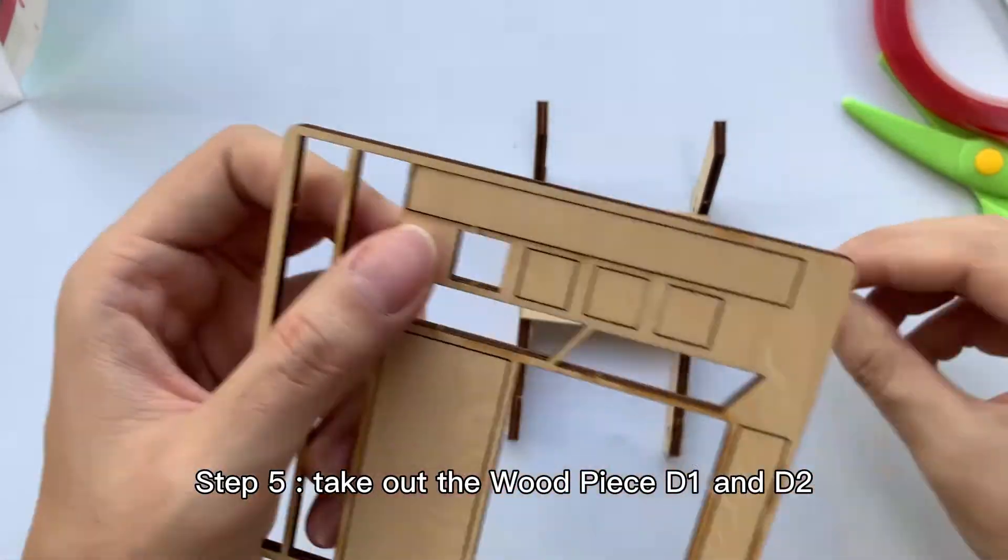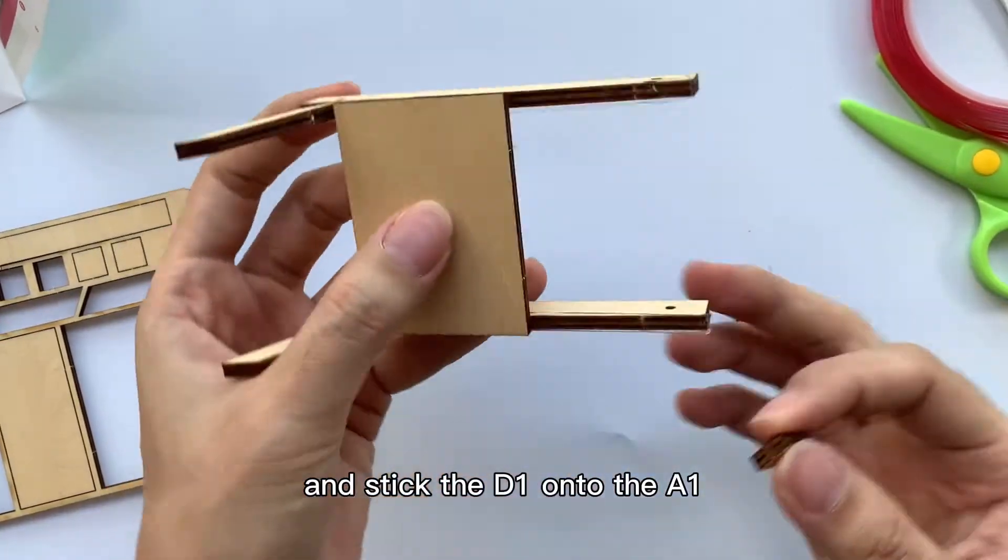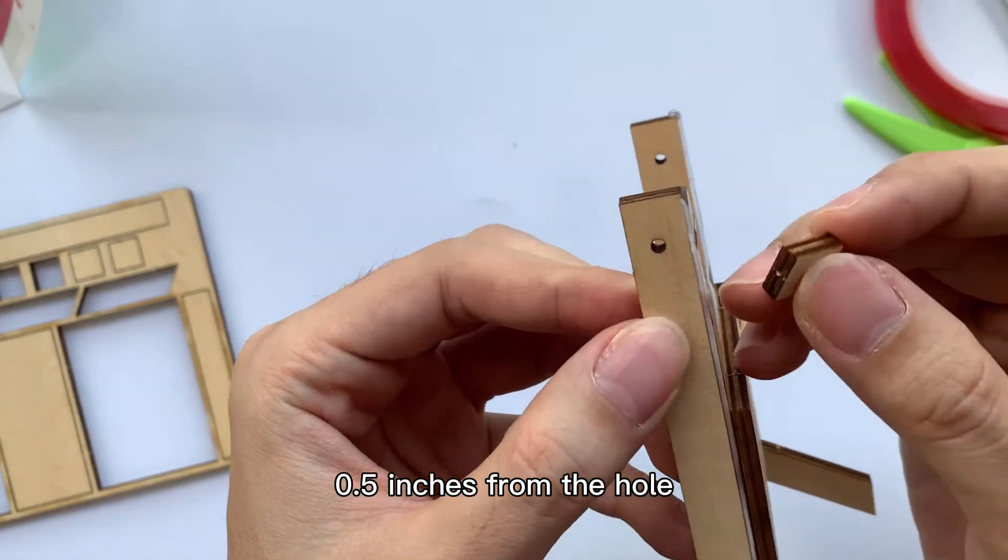Step 5: Take out the wood piece D1 and D2 and stick the D1 onto the A1, 0.5 inches from the hole.